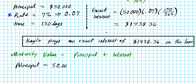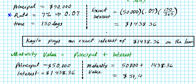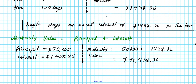The principal amount is $50,000 as indicated earlier. Her exact interest is $1,438.36. This is all we need to compute the maturity value. So the maturity value is $50,000 plus $1,438.36, which gives us $51,438.36.